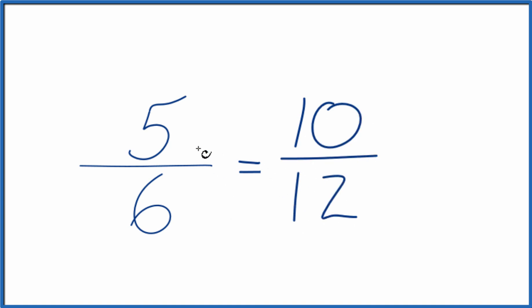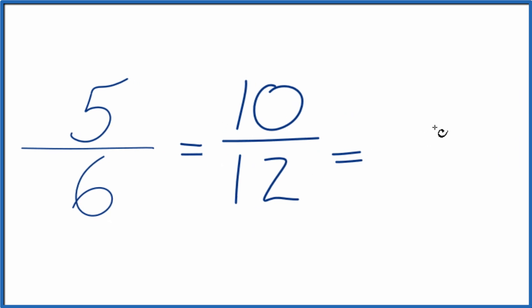So this is an equivalent ratio for 5/6. You could call it equivalent fraction. Let's do another one. Let's multiply both the numerator and denominator by 3. 5 times 3 is 15. 6 times 3 is 18.